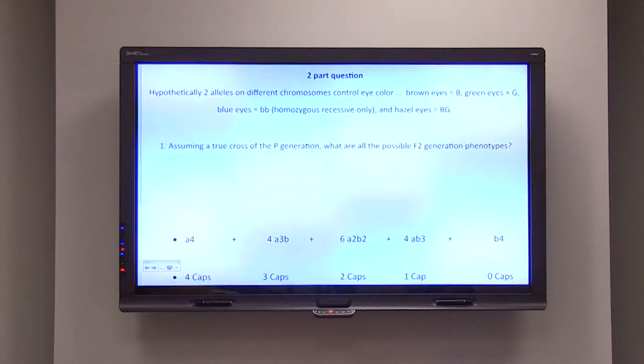You can only have blue eyes in a homozygous recessive situation only. Hazel eyes result from at least one capital B and one capital G.